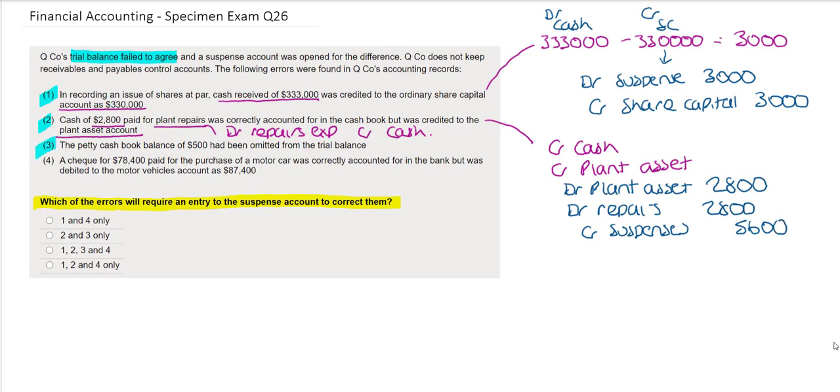Our third error tells us that the petty cash book balance of $500 has been omitted from the trial balance. If we have the omission of an entire balance then this will result in a suspense account balance. Our petty cash account is on the debit side. To correct this we would need to show petty cash on the debit side for $500. The other side will then be to include the balance in the suspense account which is a credit of $500.